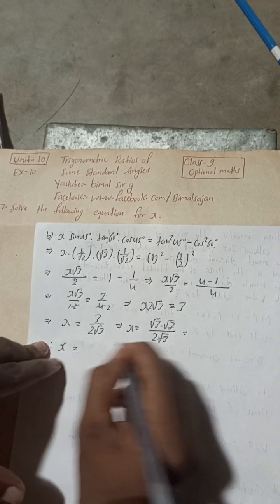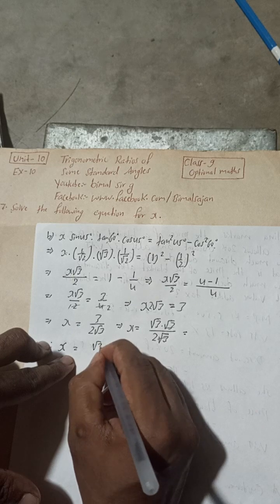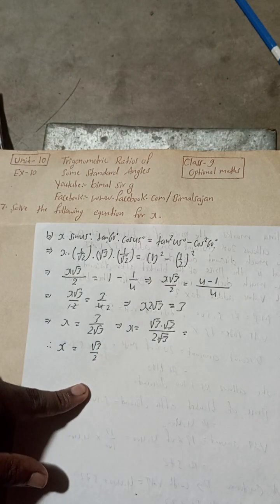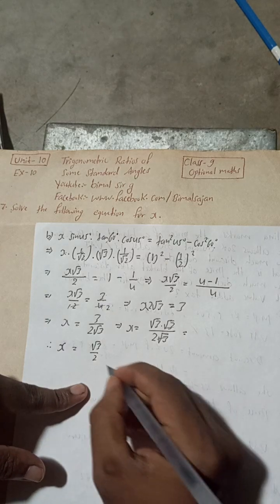Therefore, x is equal to root 3 by 2. Both answer is okay, root 3 by 2. So now you can write, this is the solution of number B.